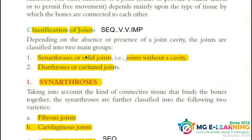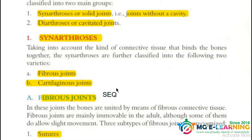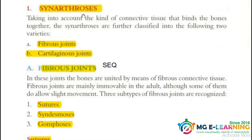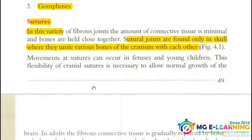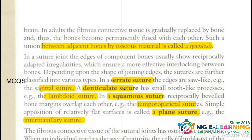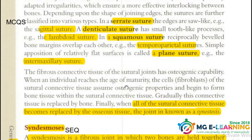Classification is very important in General Anatomy, so you have to draw all the tables of the classification. First is synarthrosis. There are two different types of synarthrosis — the first is fibrous joints and its examples. The examples are elaborated along with different types of sutures, which are also important for your MCQs.